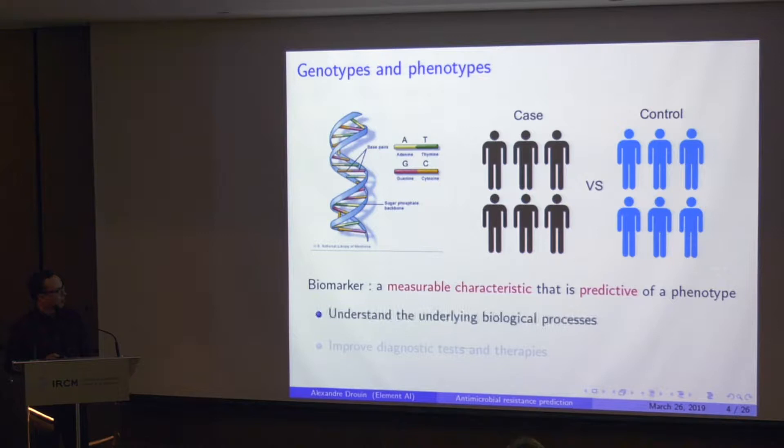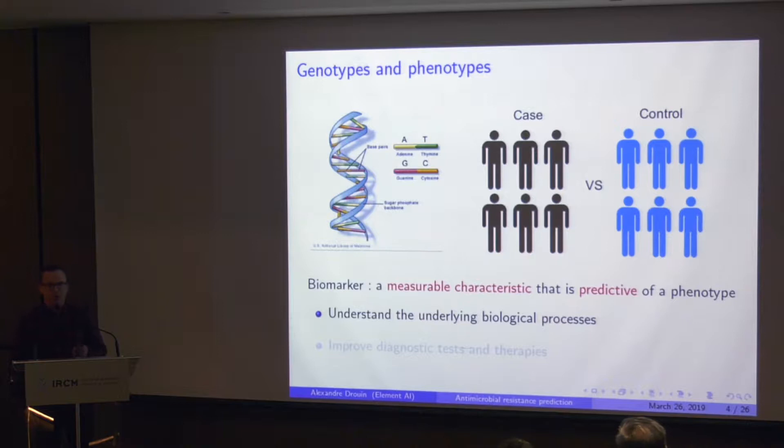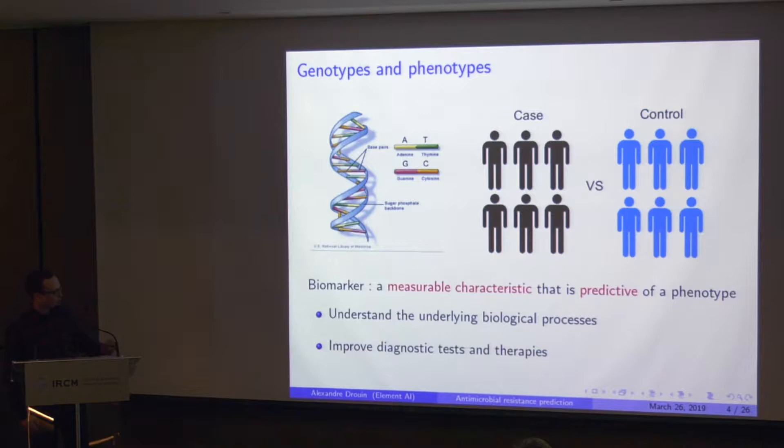We want to find this kind of biomarker, first of all, to better understand the biological processes that underlie a phenotype. If we know which genes are involved, we might be able to understand the process better. We could also use this kind of biomarker to create better diagnostic tests to try to anticipate phenotypes before they actually occur.